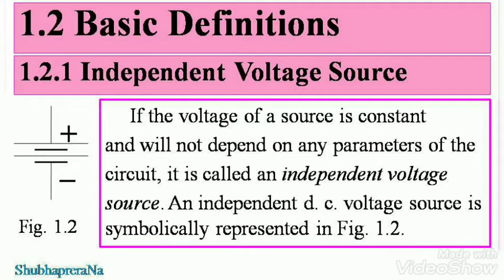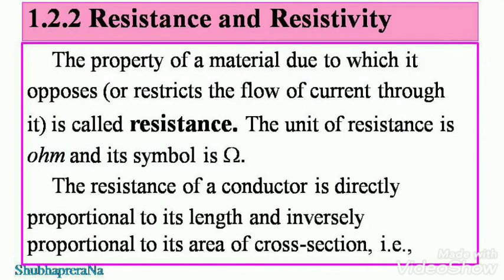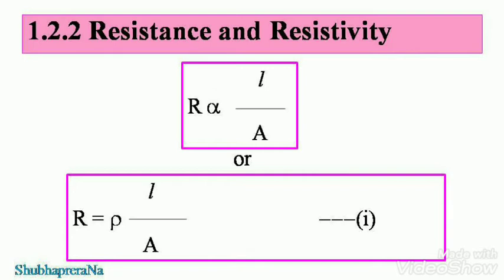Now let's look at resistance and resistivity. The property of a material due to which it opposes or restricts the flow of current through it is called resistance. The unit of resistance is ohm, and its symbol is omega — the capital omega of the Greek alphabet. The resistance of a conductor is directly proportional to its length and inversely proportional to its area of cross-section: R is proportional to L divided by A. Note down the formula.